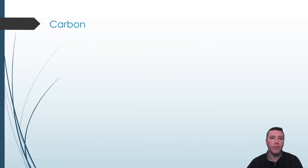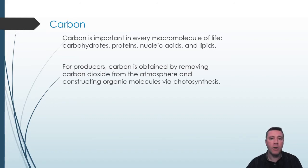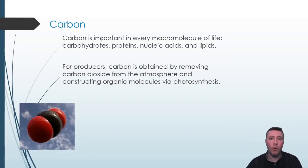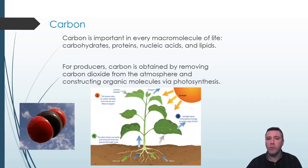The first cycle we're going to explore involves carbon. Carbon atoms are important in every major category of biomolecule — they're necessary for carbohydrates, proteins, nucleic acids, and lipids. How an inorganic carbon compound like carbon dioxide is incorporated into living things involves photosynthesis. Photosynthetic organisms, also known as producers or autotrophs, obtain carbon dioxide from the atmosphere, and by using the sun's energy, construct organic molecules through a series of photosynthetic reactions.